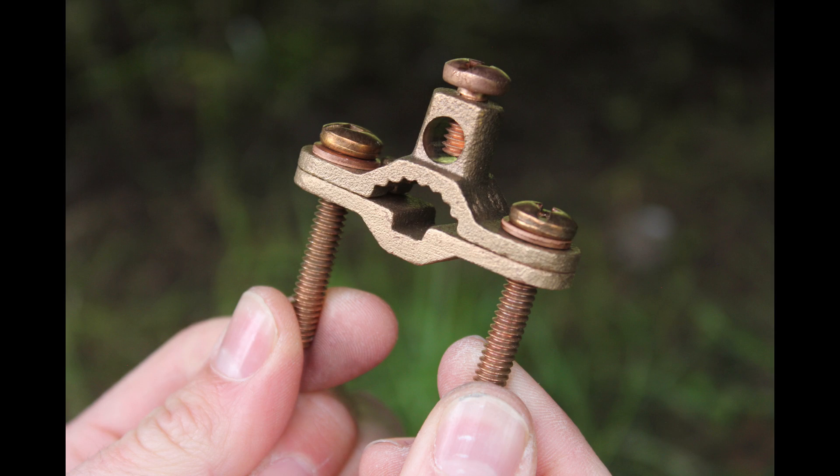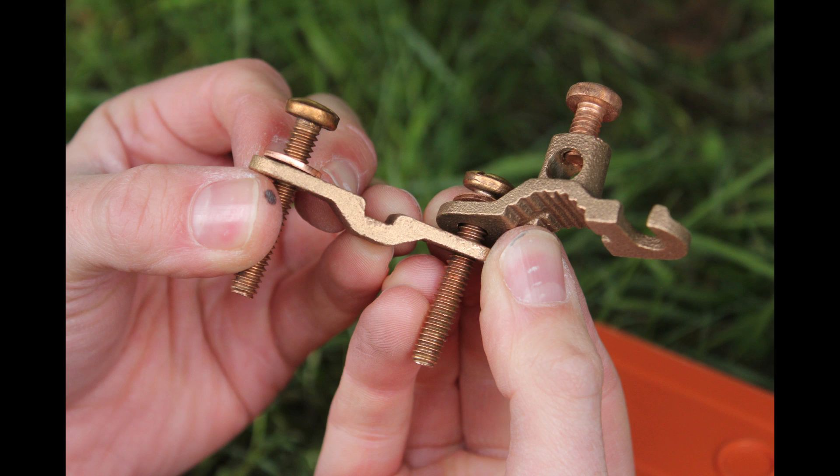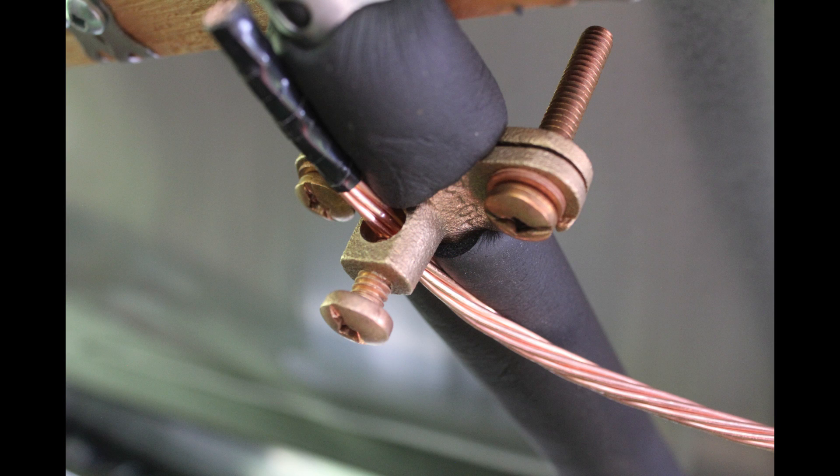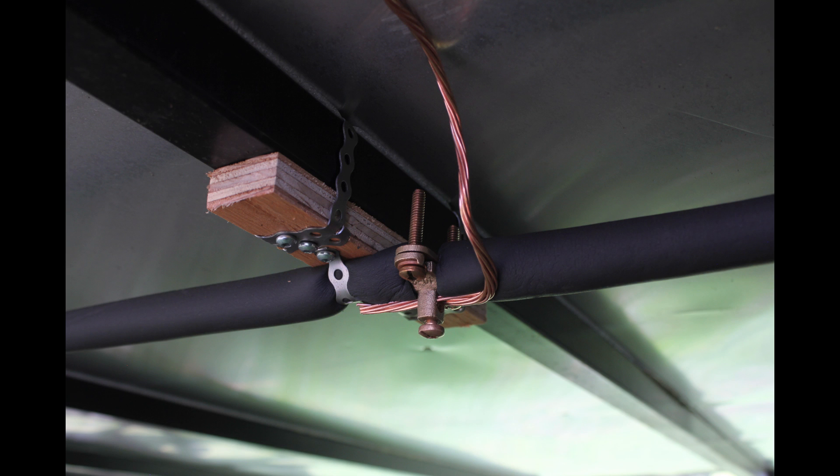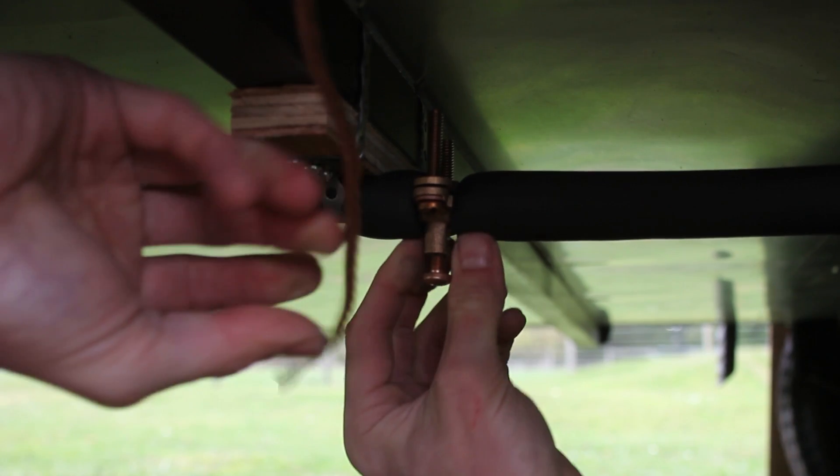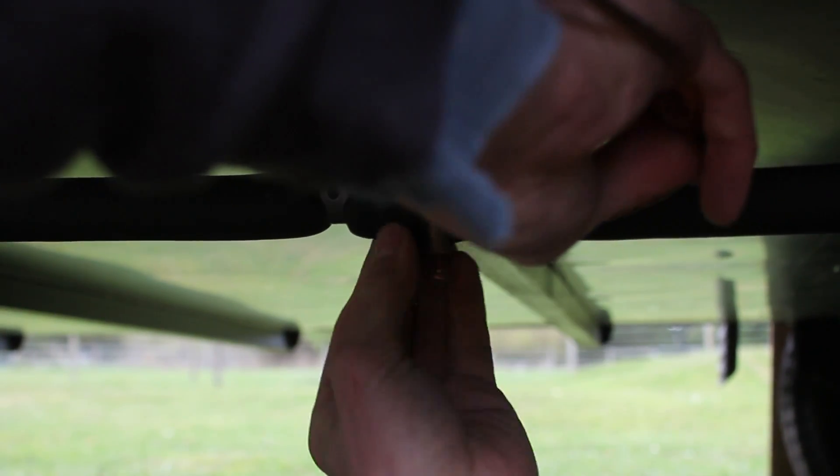And then this is a pipe bonding clamp and it's great because it can swing open and then can just be fit around an existing pipe and then it will cinch down. Obviously you don't want to crush the pipe but we'll get it so it's just snug and making a good electrical bite onto the pipe and then the top hole is a provision to allow the bonding conductor to go through.